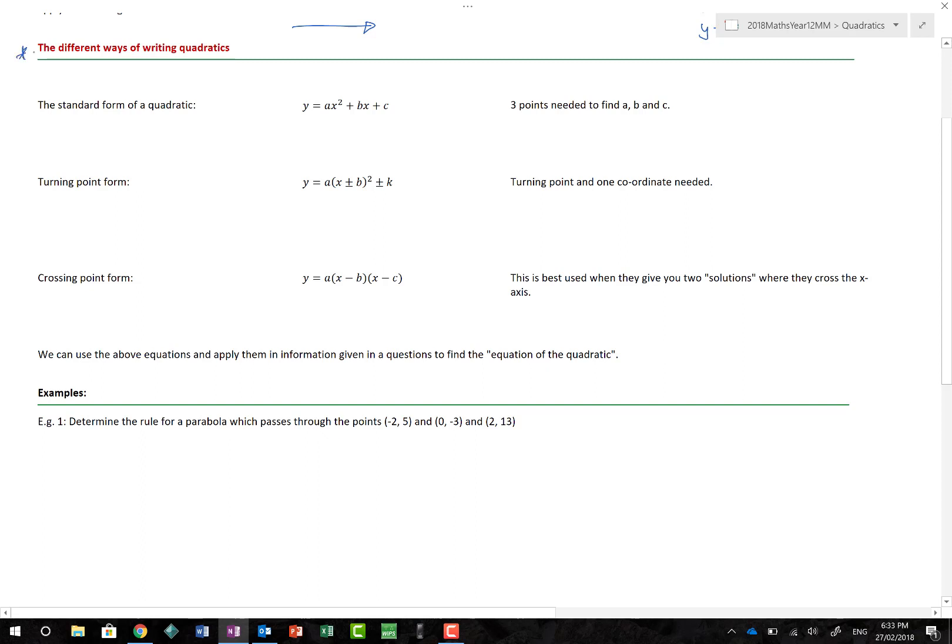Now there are three different ways of writing quadratics and you've come across all of them. This is what I would call the standard form of writing the quadratic, y = ax² + bx + c. Now if you wanted to find the values of a, b and c, because there's three unknowns, then we would need to have three equations. And to be able to have three equations, we'd need to be given three points on the graph. If we're given those three points we can just use algebraic techniques, as in simultaneous equations, to help us find the values of a, b and c.